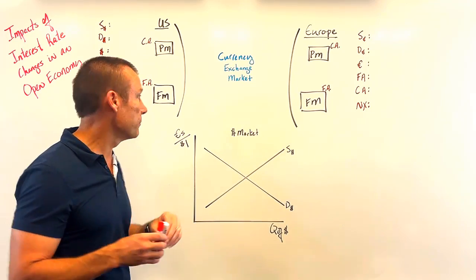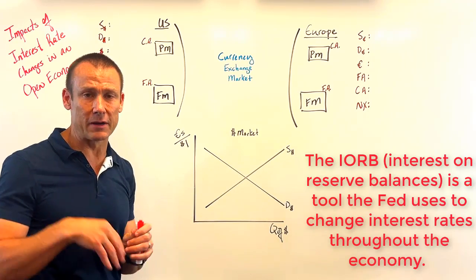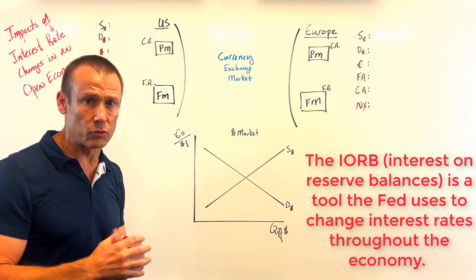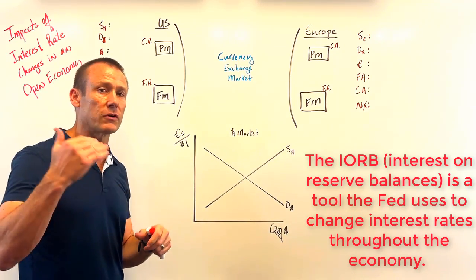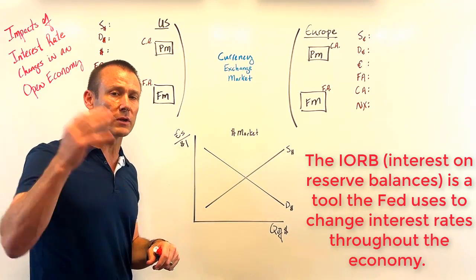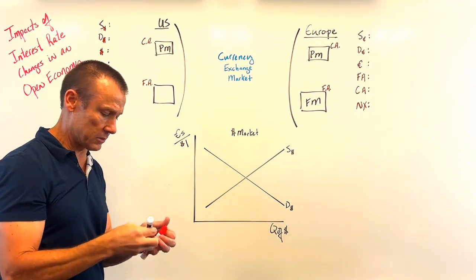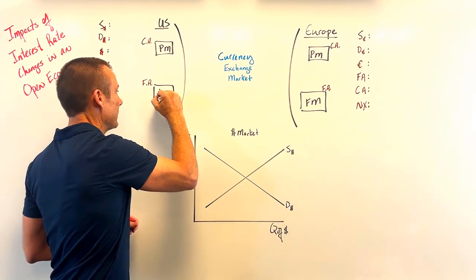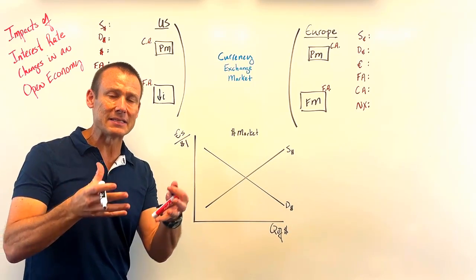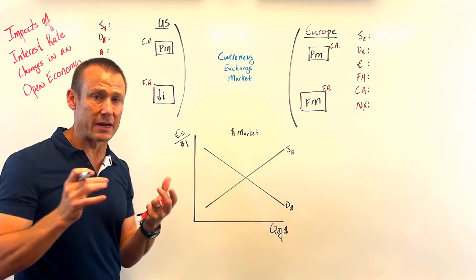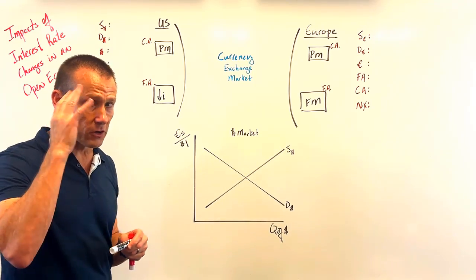Let's say we get a problem in which the Fed lowers the IORB. The IORB is an administrative policy tool used to change their policy rate, which is the federal funds rate. So it causes the federal funds rate to go down, which causes interest rates in our financial markets to go down. The Fed is essentially doing easy monetary policy — interest rates in the United States go down.